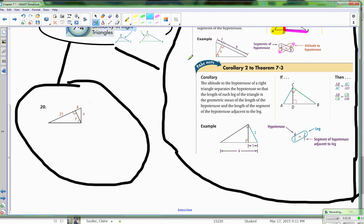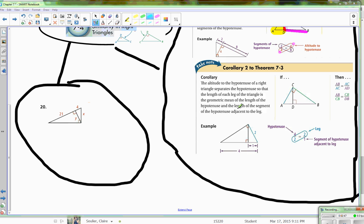Another corollary, the second corollary, is: the altitude of the hypotenuse of the right triangle separates the hypotenuse so that the length of each leg is the geometric mean of the length of the hypotenuse and the length of the segment of the hypotenuse adjacent to the leg.